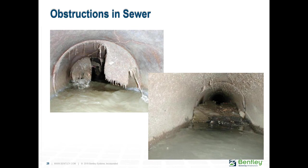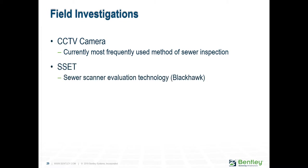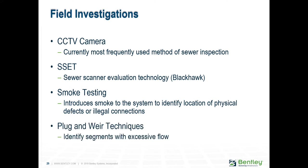Here are some examples of obstructions in sewers. A camera pulled through sewers continually records footage for later review or before-and-after comparison. The person monitoring the CCTV inspection can verbally record a running commentary on the tape. The inspection should be carried out sufficiently slowly to enable all features to be observed. CCTV is useful for finding roots, collapsed pipes, sags, illegal taps, and cracks, but not for finding sediment, since the pipe is usually cleaned before inspection, or illegal connections on customer property.